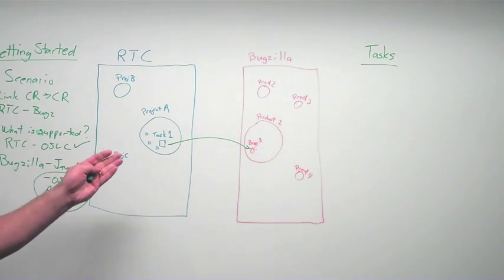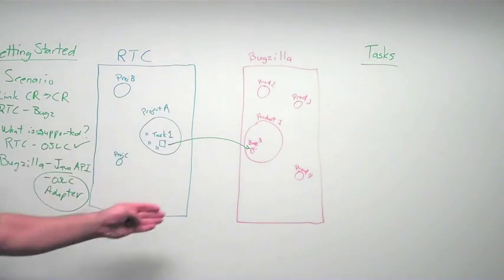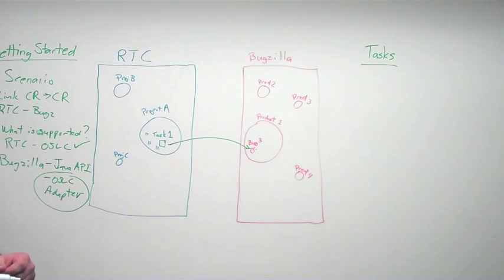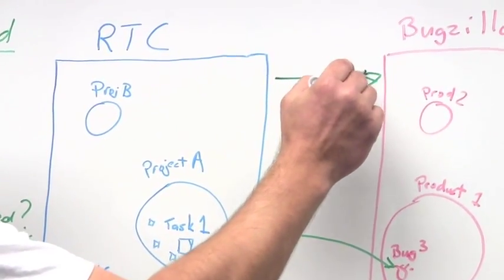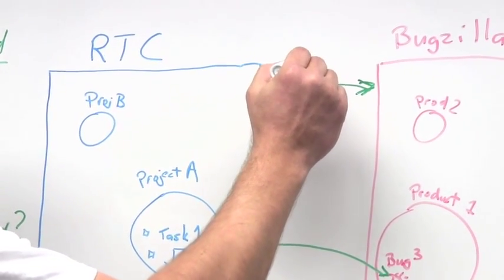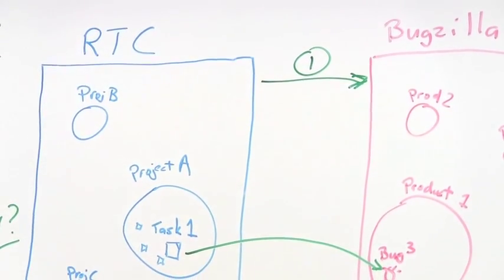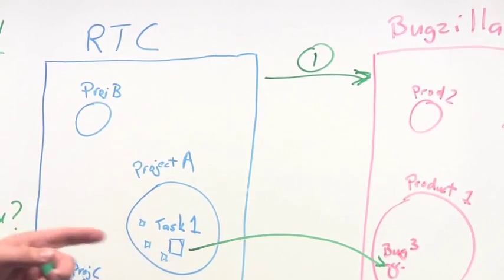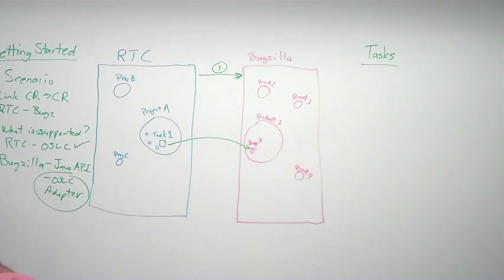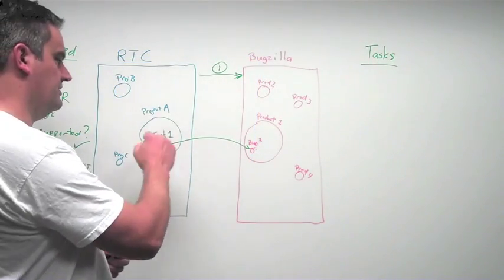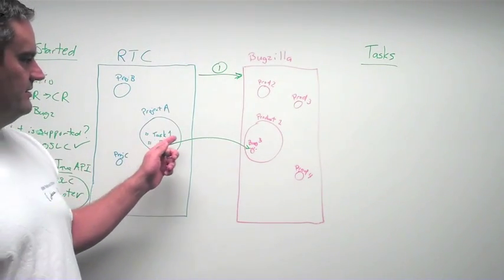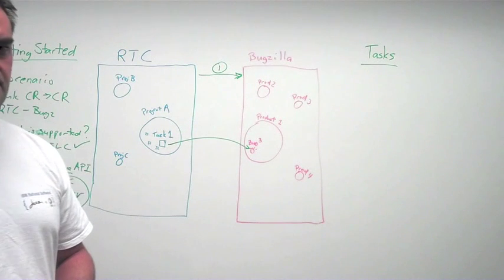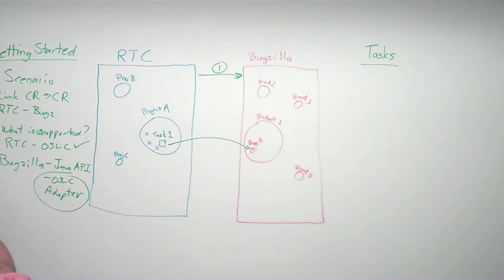First, we need to take a look at, well, we have this RTC server that we want to connect to some other server. So first, we need to establish some type of friend or trust relationship. That's one thing we need to do. Once we get to that point, we know we're working within a certain project, and a project is a container for various tasks.